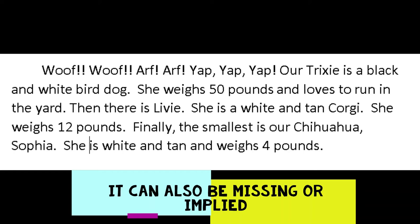So again, the same paragraph — with onomatopoeias at the start. Our Trixie is a black and white bird dog. She weighs 50 pounds and loves to run the yard. Then there's Livy. She is a white and tan corgi. She weighs 12 pounds. Finally, the smallest is our Chihuahua Sophia. She is white and tan and weighs four pounds. At no time is the main idea stated, although we all understand this is about someone's three dogs.